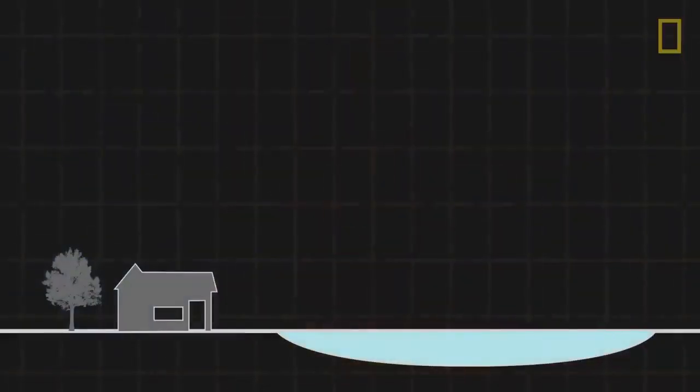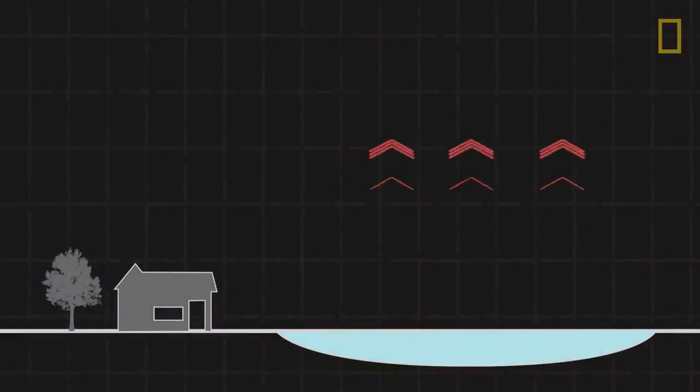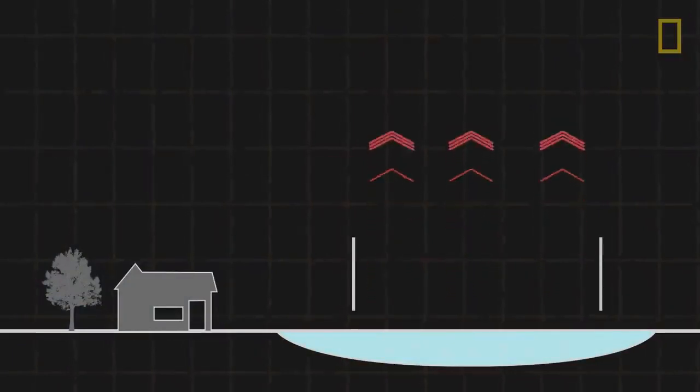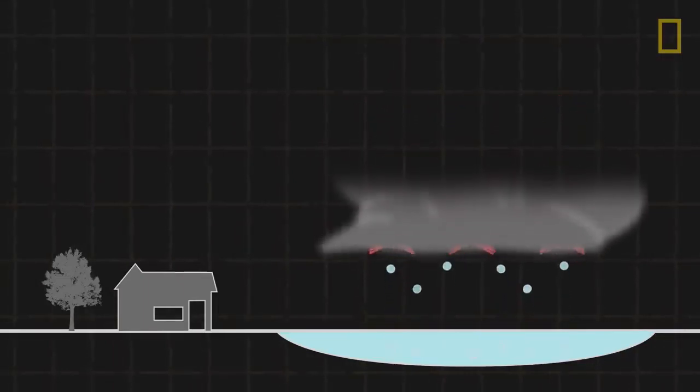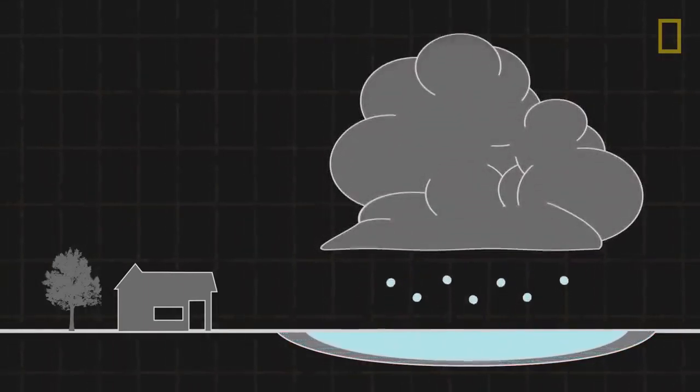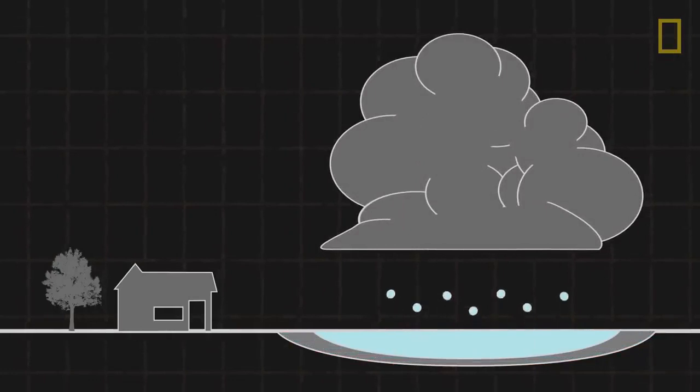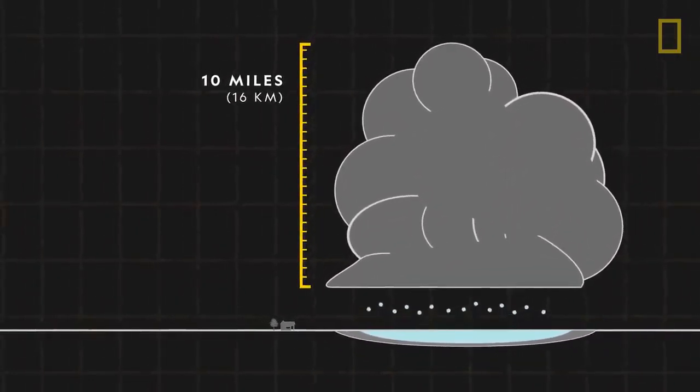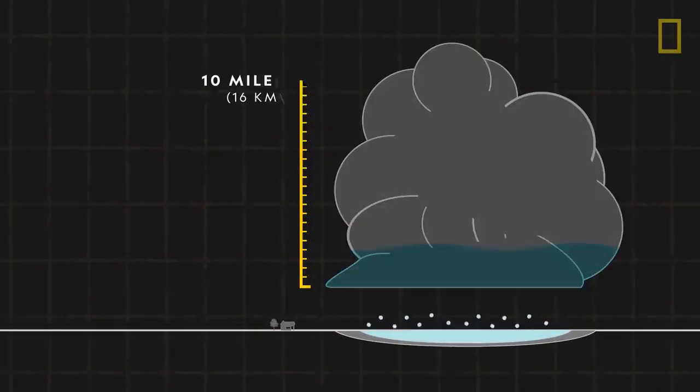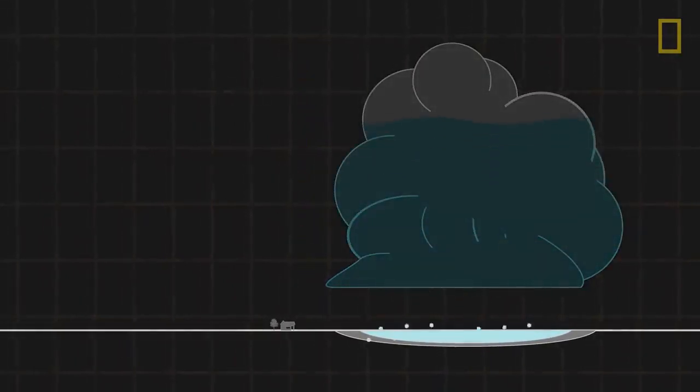All thunderstorms form when warm air in the lowest layers of the atmosphere rises. Called an updraft, this air causes water from the Earth's surface to evaporate and carries the moisture upward to form clouds. The clouds then build and grow, sometimes as tall as 10 miles high.